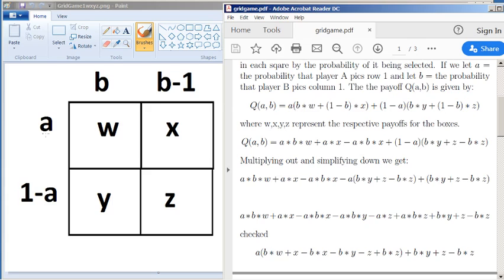So in the first row, obviously it's a times everything, so I've taken that out of brackets, a times b times w, so that's the first square, and then a times, so the a again is there, times 1 minus b times x. So that's probability to this square.